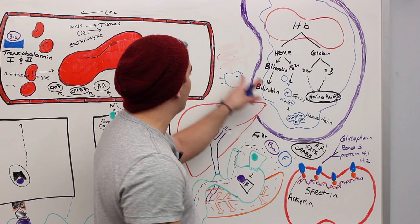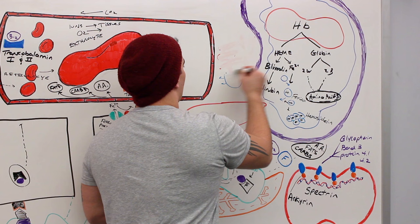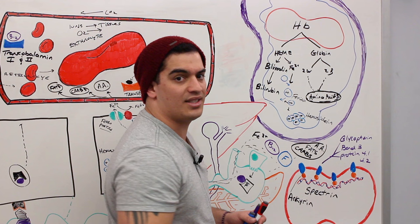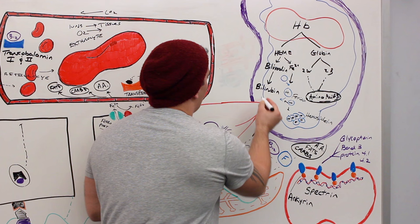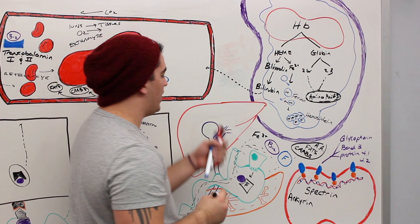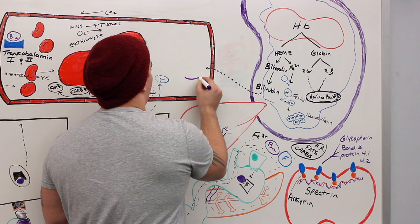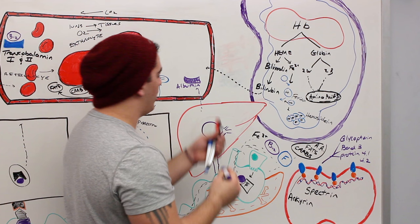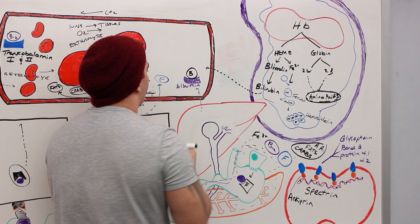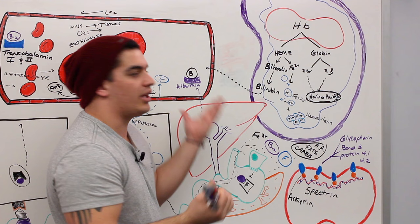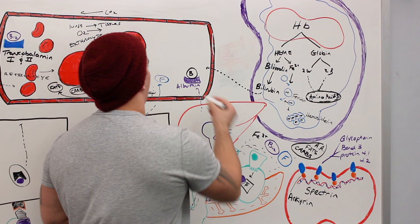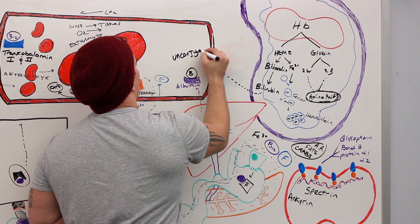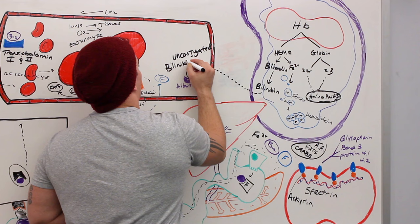What happens with bilirubin? We can't just throw bilirubin into the bloodstream — it's actually very toxic and can cause neurotoxicity. So bilirubin needs to be bound to something when it's pushed out of the macrophage into the bloodstream. The liver makes a plasma protein called albumin, and bilirubin binds onto albumin so it can circulate in the blood. When bilirubin is bound to albumin, this is called unconjugated bilirubin.